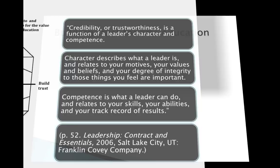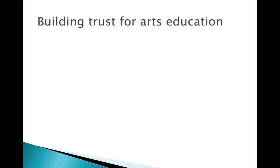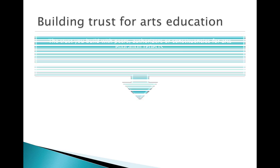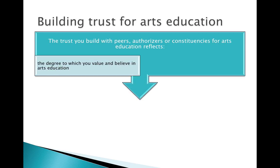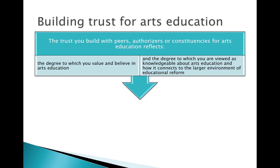So thinking about that in terms of arts education — how do we build trust for arts education? First and foremost, we build trust based on your commitment and your value and belief system about arts education, and also the degree to which you are viewed as knowledgeable about arts education and how it connects to this larger environment of educational reform in which we are all currently placed.